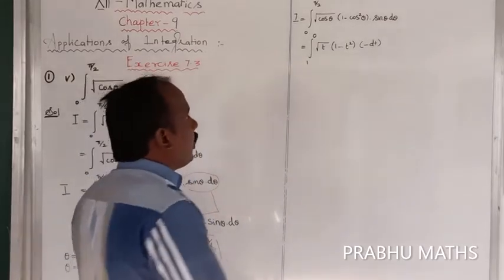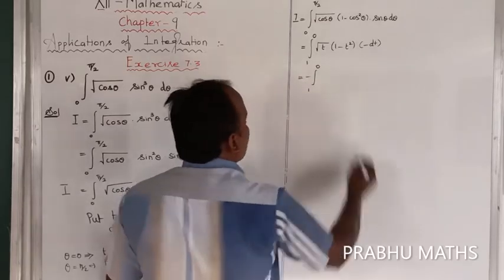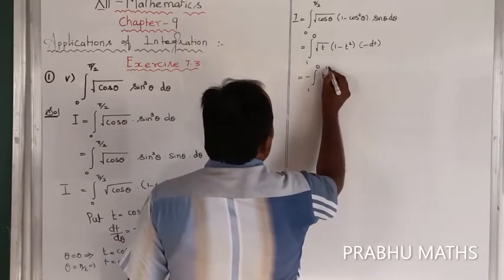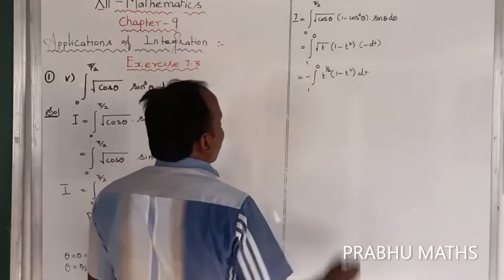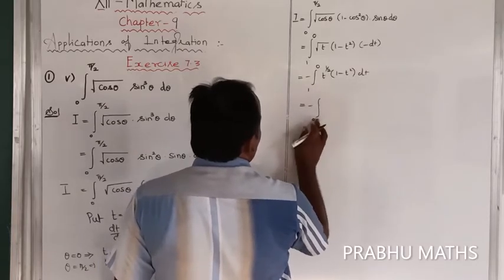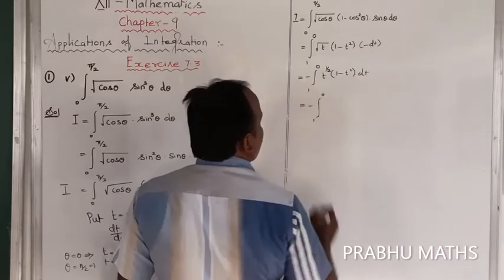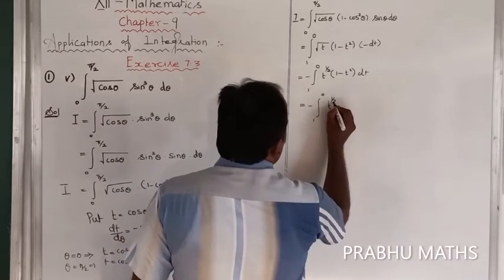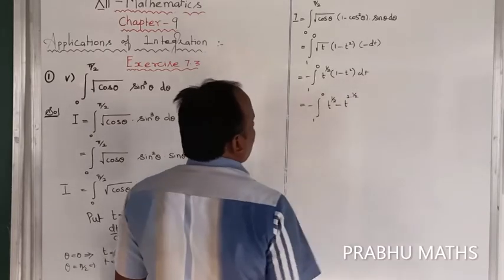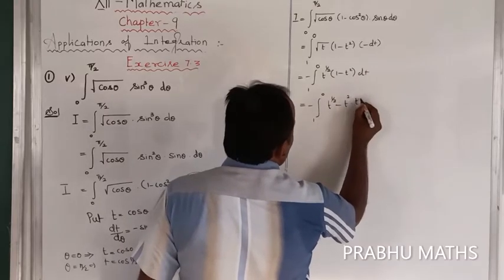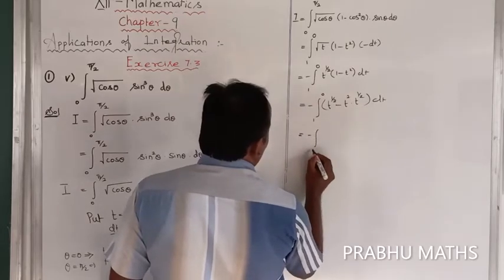So I equals -∫₁⁰ t^(1/2) · (1 - t²) dt. Distributing t^(1/2) inside, we get -∫₁⁰ [t^(1/2) - t² · t^(1/2)] dt, which simplifies to -∫₁⁰ [t^(1/2) - t^(5/2)] dt.